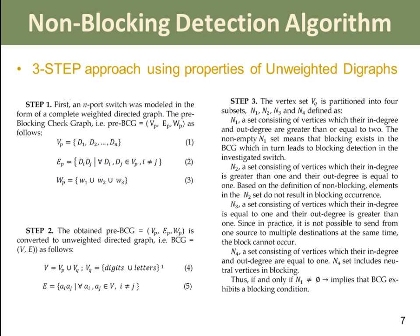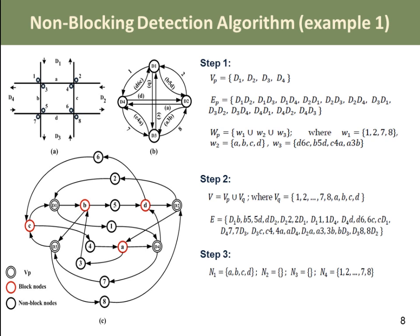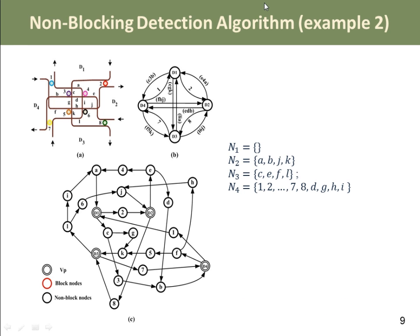This approach can be utilized to detect blocking in all photonic switches with any number of ports. Here is an example of the 3-step approach showing the steps, where a non-empty subset N1 indicates blocking. However, by applying the 3-step approach on Helix Edge, we can see subset N1 is empty, so it is a non-blocking switch. You can see subsets N1 to N4.